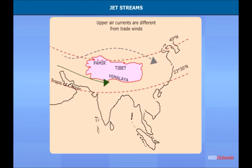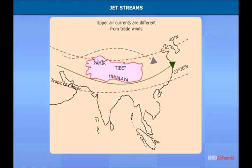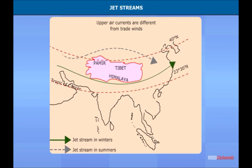You are aware that air moves from high pressure to low pressure areas. The winds blowing over the Indian Ocean rush towards the northern plains in summers and are known as northwest monsoon winds.